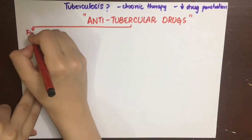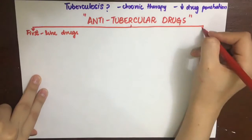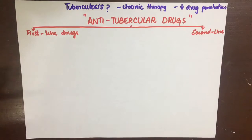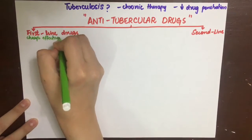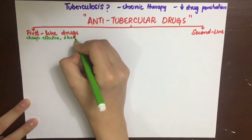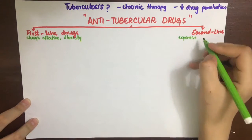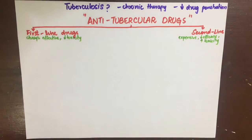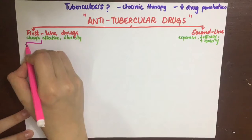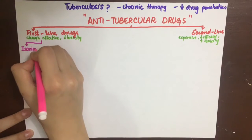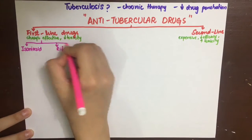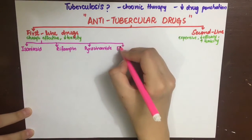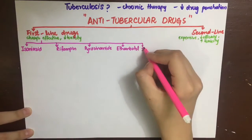The drugs used against tuberculosis can be divided into first-line and second-line anti-tubercular drugs. The first-line drugs are used first; they are cheap, effective, and have decreased toxicity. The first-line anti-tubercular drugs include isoniazid, rifampin, pyrazinamide, ethambutol, and streptomycin.